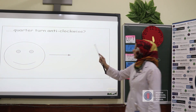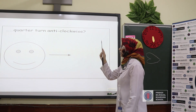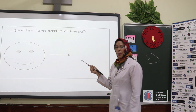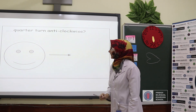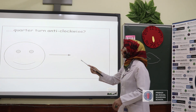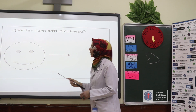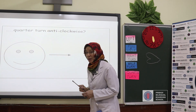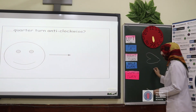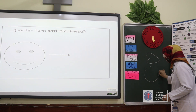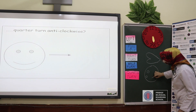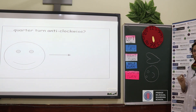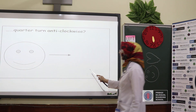How about this one — a smiley face? We have a smiley face: quarter turn and anti-clockwise. You have three seconds again. Excellent! You will turn the shape to the left side because it is anti-clockwise, and draw the answer like this.